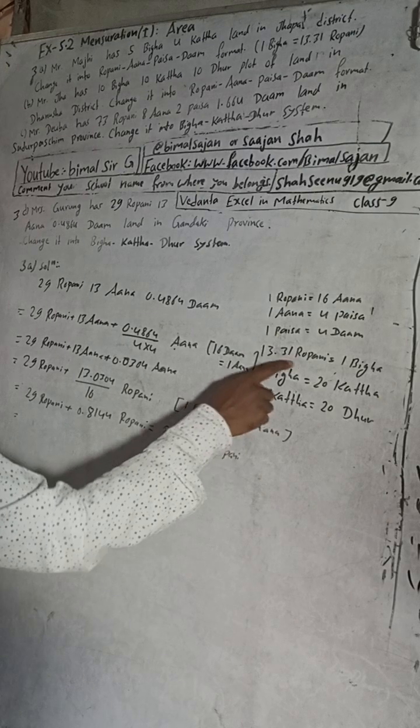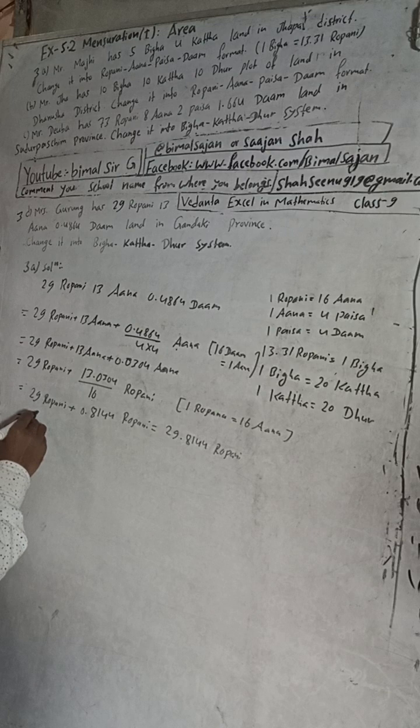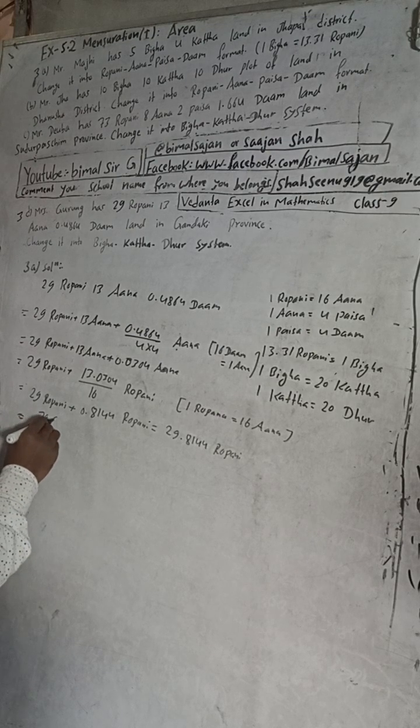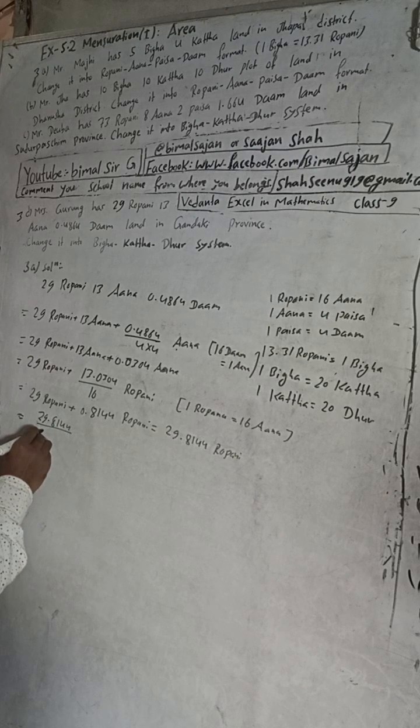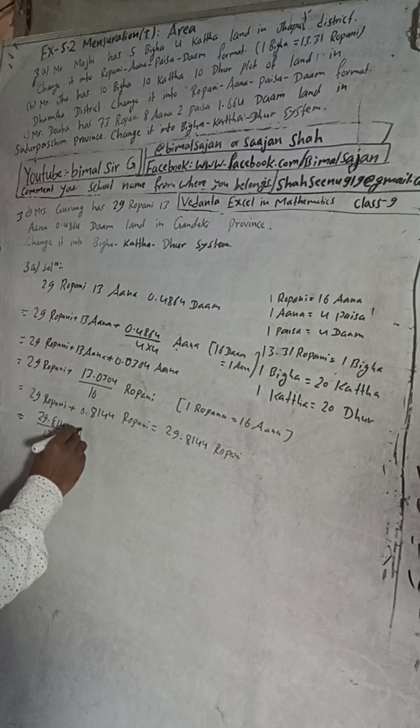So when you divide this by 13.31, you will get into the ground. So this will be now here 29.81 Ropuni divided by 13.31. This will be ground.